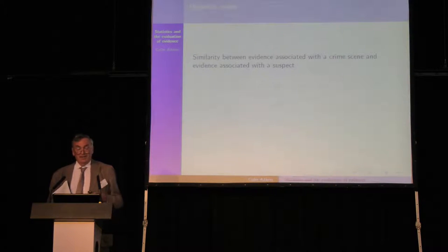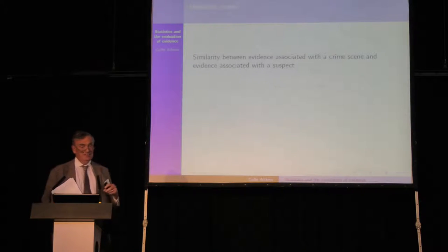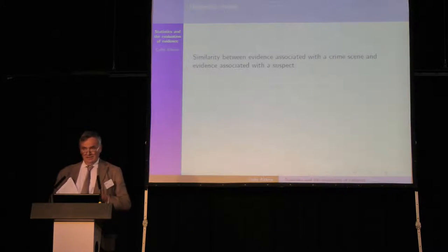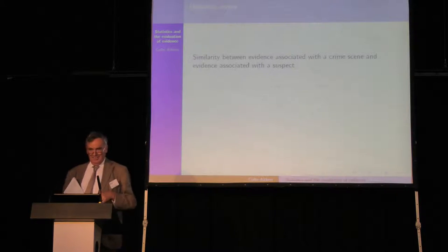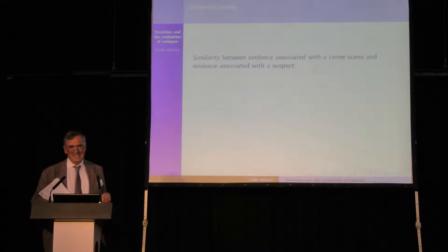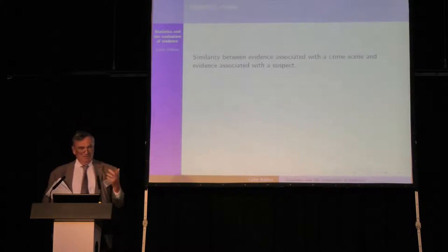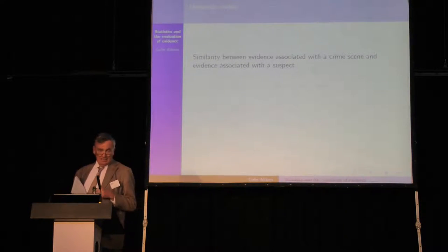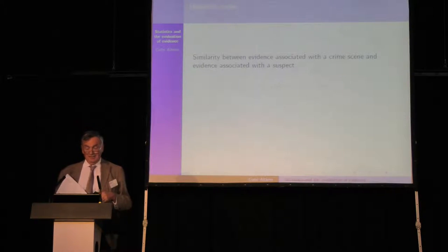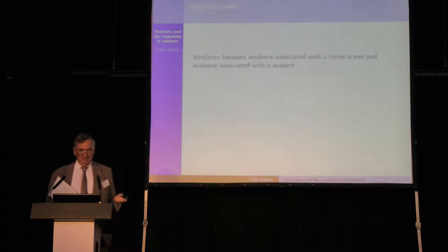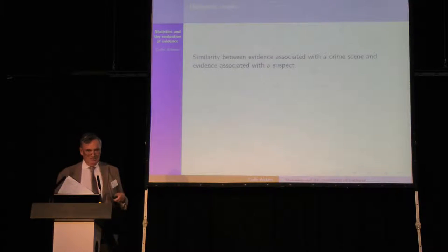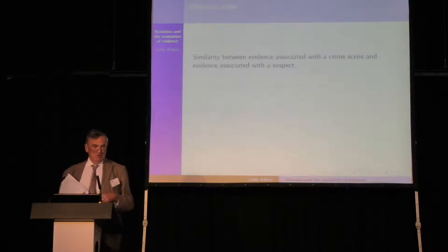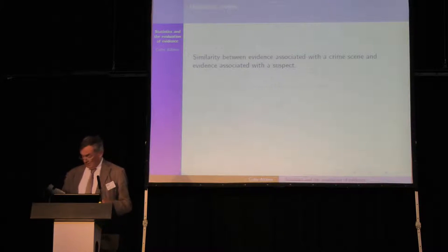What we're looking for is a similarity with evidence associated with a crime scene and evidence associated with a suspect. Generally we're thinking primarily about trace evidence: fingerprints, DNA, fragments of glass, gunshot residues and so on. You find something at a crime scene which you link to the criminal, you find something similar associated with a suspect.